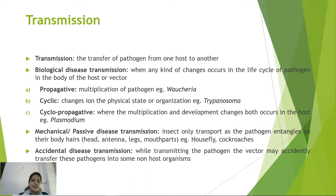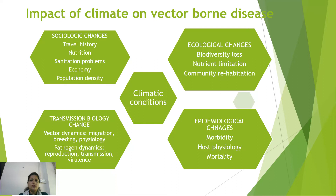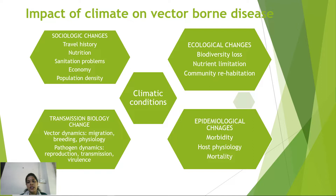Accidental disease transmission occurs when the pathogen is accidentally transferred into a non-host organism. Beyond the vector, pathogen, and host, climatic conditions also matter. Sociological factors like travel history, nutrition, sanitation, economy, and population density are important. Ecological changes such as biodiversity loss, food limitation, and community habitat shifts also play a role. Epidemiological factors like morbidity, mortality, and host physiology, as well as vector dynamics and pathogen dynamics, all influence transmission.